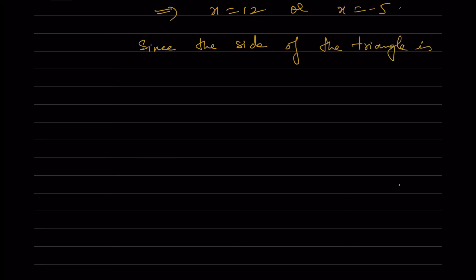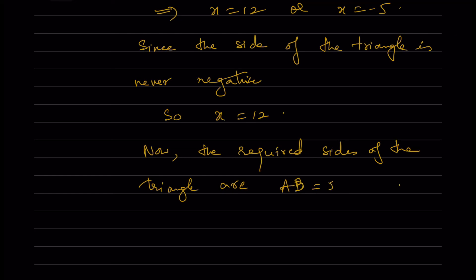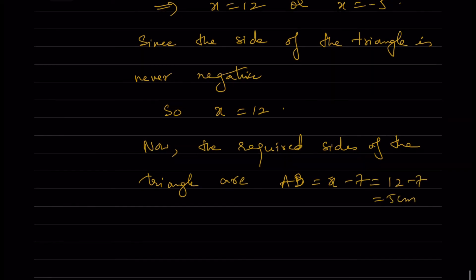Since the side of a triangle cannot be negative, we discard x = -5. Therefore x = 12. The base is 12 cm and the altitude is x - 7 = 12 - 7 = 5 cm.